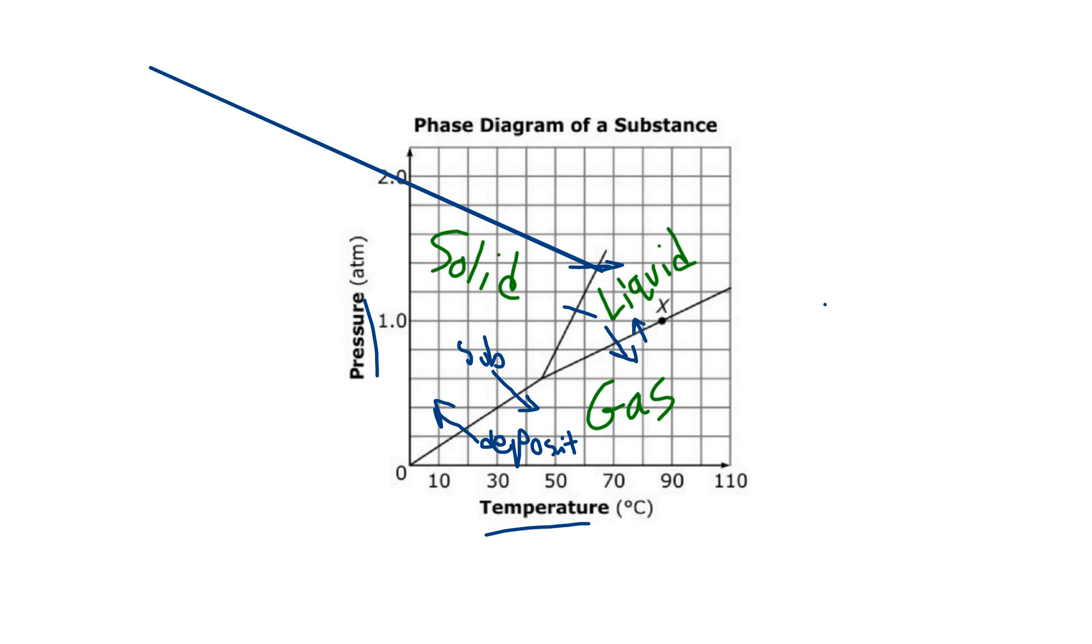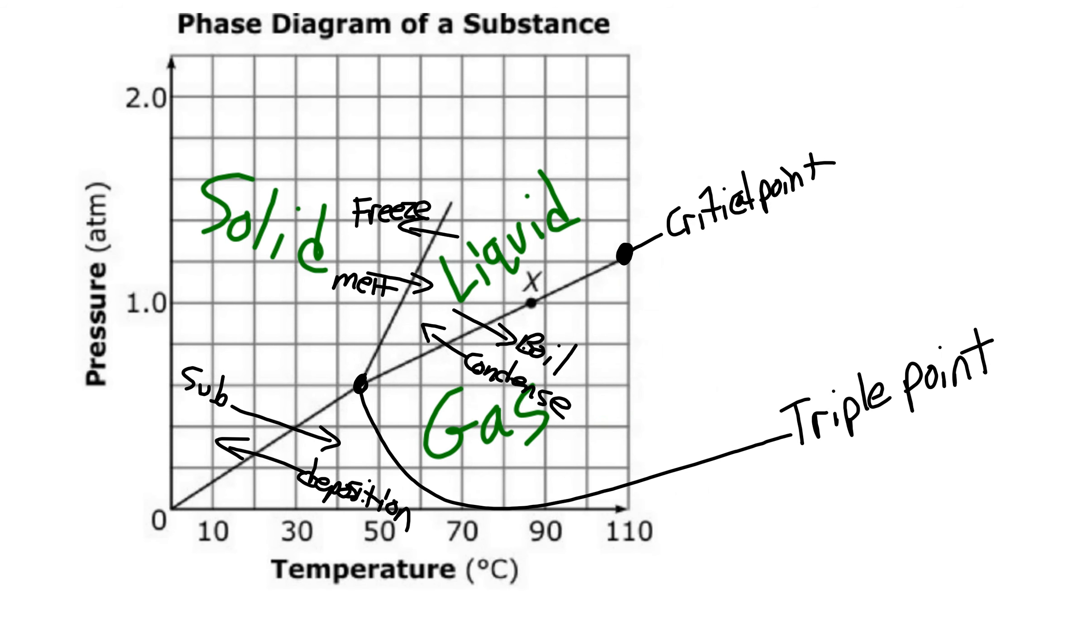So if it's on the line, for example, if we had a dot right here, that dot would be at equilibrium between the solid state and the gaseous state. So anything on the line is at equilibrium. Here's the same thing.